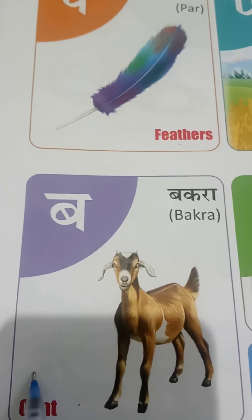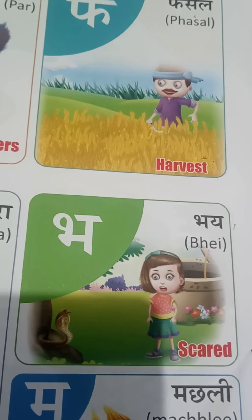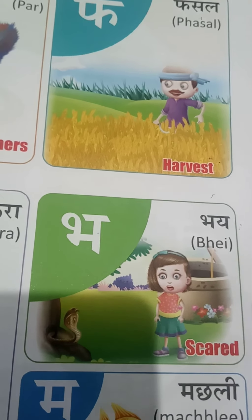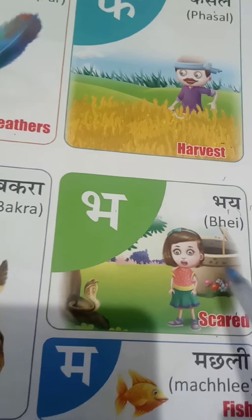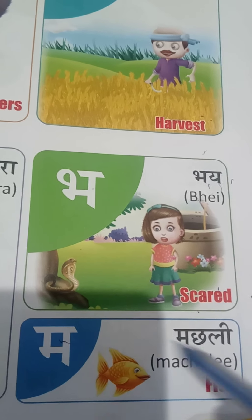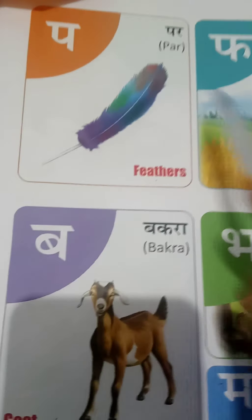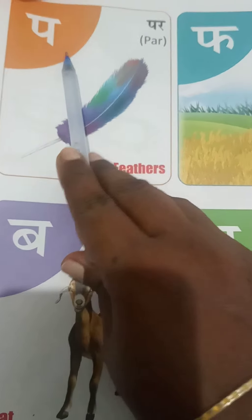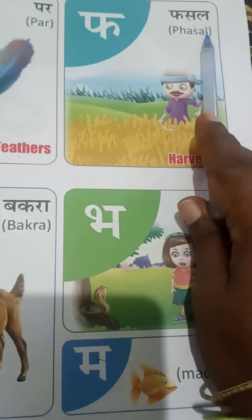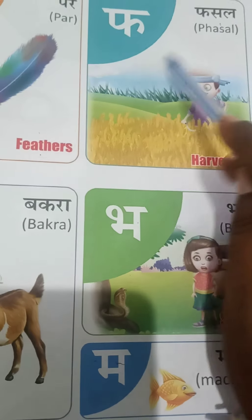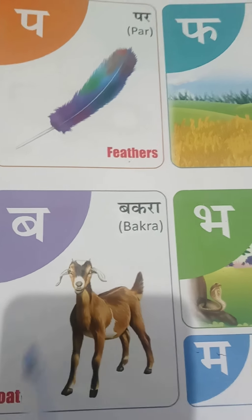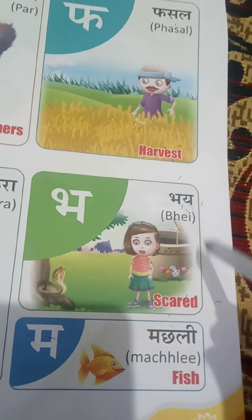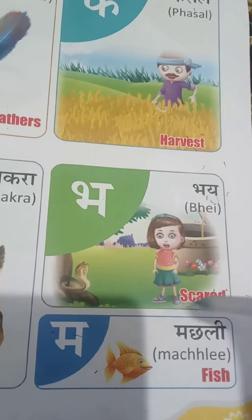Pa say bakra — goat. Pa say bakra — goat. This Pa say bai — scared. Pa say bai — scared. Maase machli — fish. Paase par — feathers. Paase fuzzle — harvest. Paase fuzzle — scared. Maase machli — fish.